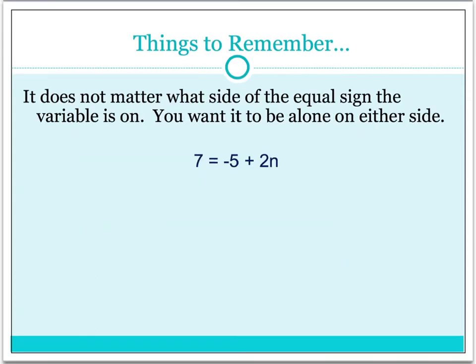Now something else to remember is that it does not matter what side of the equal sign your variable is on. The only thing you care about is getting that variable all by itself on that side of the equal sign. In this example, we have the variable n. n is now on the right-hand side of our equal sign, and we just need to get everything away from that n.